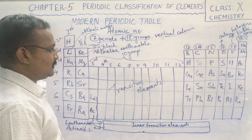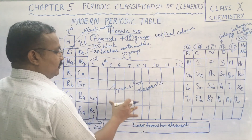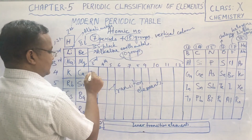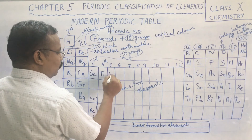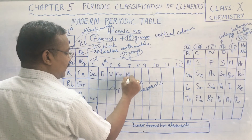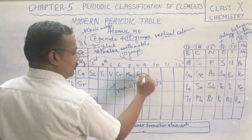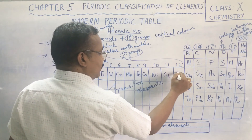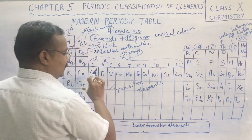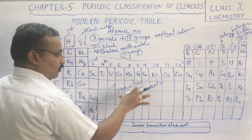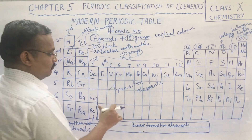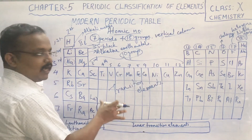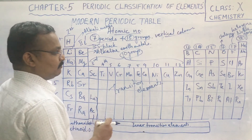The transition elements include scandium, titanium, vanadium, chromium, manganese, iron, cobalt, nickel, copper, and zinc — that is 10 groups. These are all metals, and very hard metals at that.